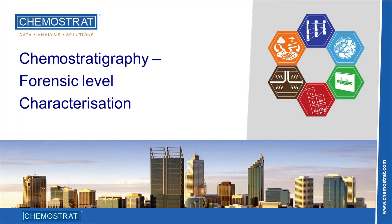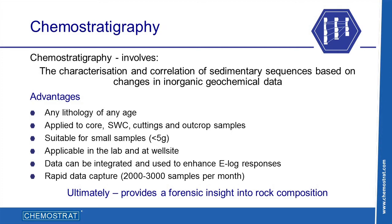Chemostratigraphy involves the characterisation and correlation of sedimentary sequences based on changes in inorganic geochemical data. It is often regarded as a new technique, but versions such as gamma, spectral gamma and wireline geochemical logs have been widely used in the oil industry for many years. At Chemostrat, we focus on the analysis of core, cuttings and outcrop samples and acquire data for up to 50 major and trace elements to obtain a forensic level characterisation of the rock composition.